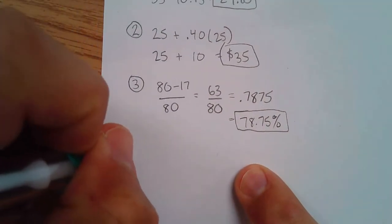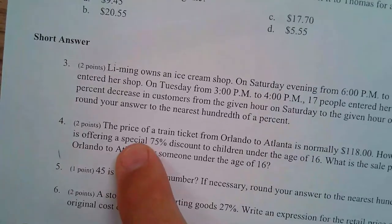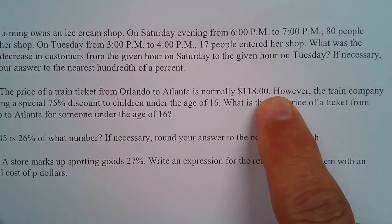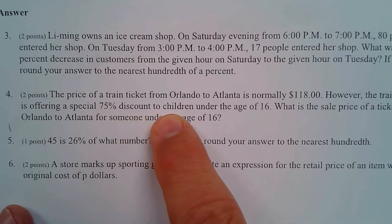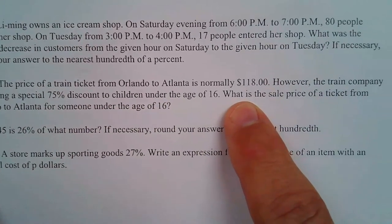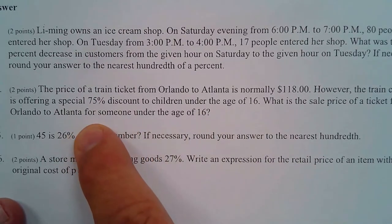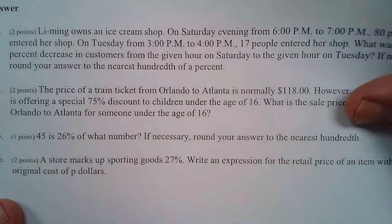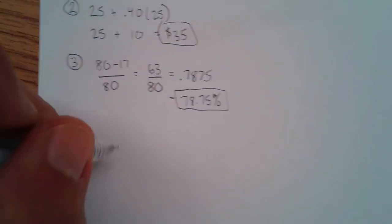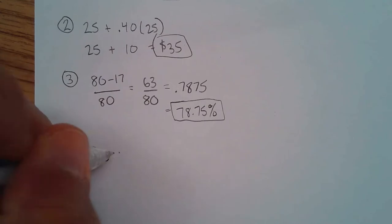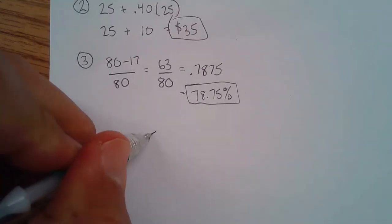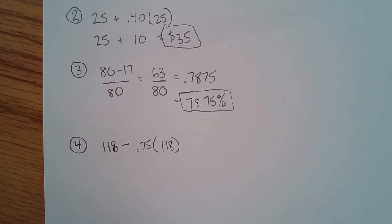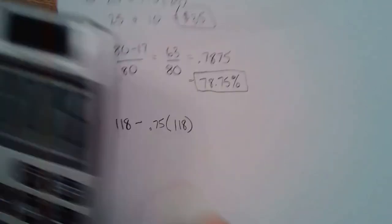Number four: the price of a train ticket from Orlando to Atlanta is normally $118. However, the train company is offering a special 75% discount to children under the age of 16. What is the sale price for someone under 16? It's $118, and we get to drop it 75%. So we have $118 minus 0.75 of $118, and I'll multiply those two together first.